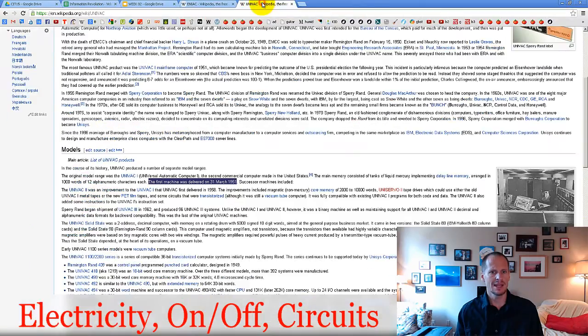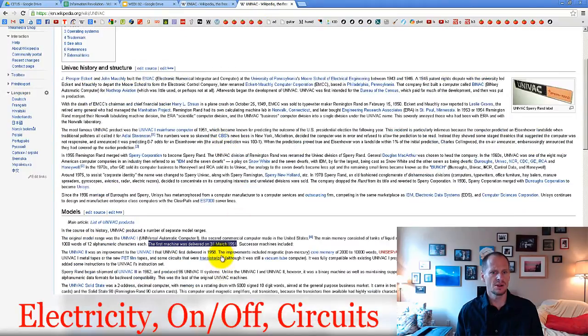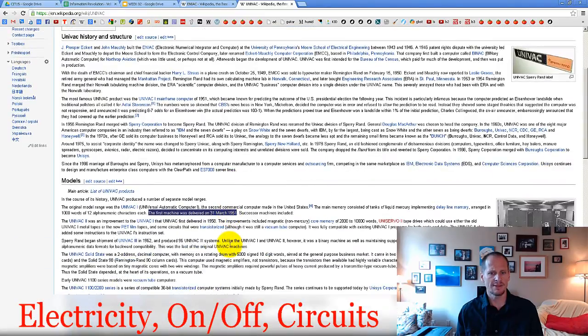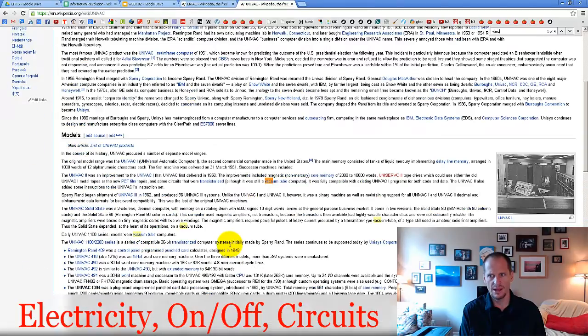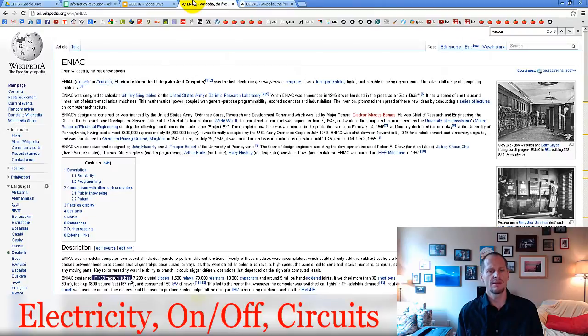The second computer was the UNIVAC which was turned on marked 1951. One of the things that was problematic with first generation of computers with using vacuum tubes is that they ran hot, and so they produced heat, and that was problematic. And then they also burned out pretty quickly.